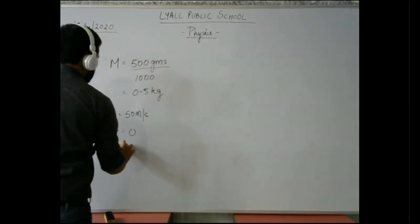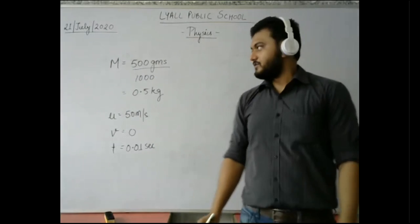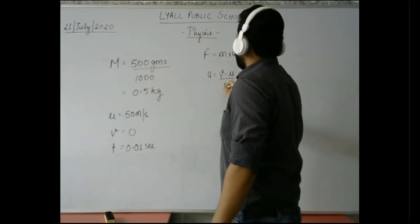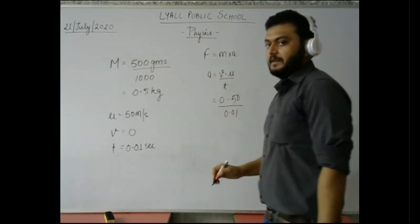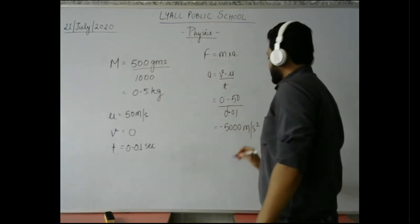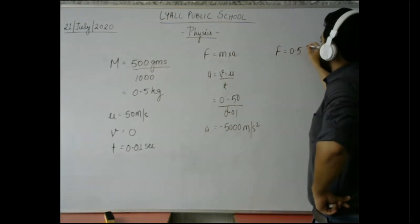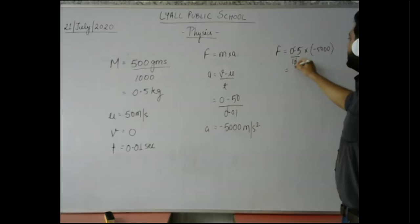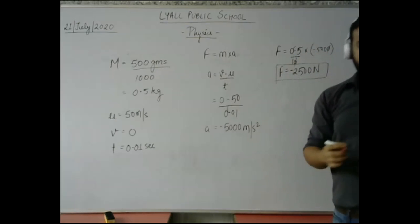The time is 0.01 seconds. This gives us the acceleration: it will be approximately minus 5000 meters per second squared. So the force F equals 0.5 kg multiplied by minus 5000, giving a force of minus 2500 N. It is a very easy question.